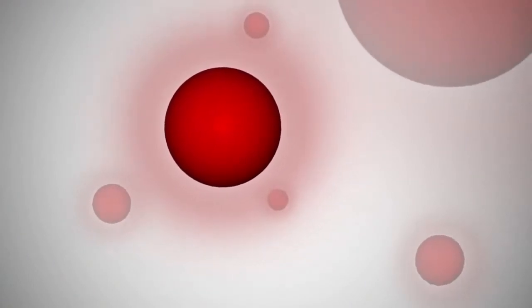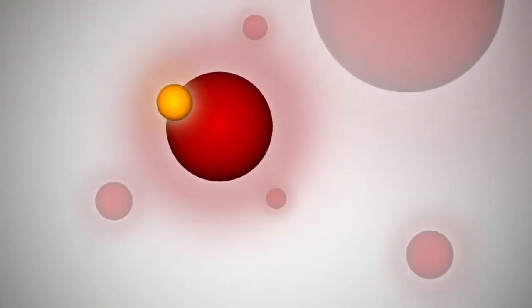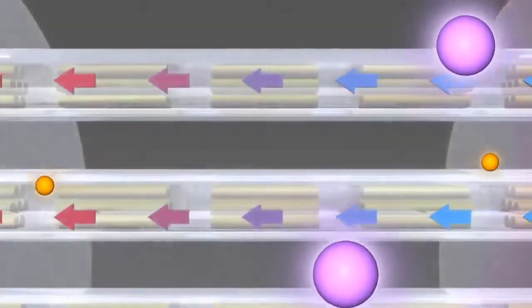The heavy water slows down tiny particles called neutrons, so they are more likely to hit and split the uranium atoms. A chain reaction of splitting atoms releases tremendous heat into the heavy water.